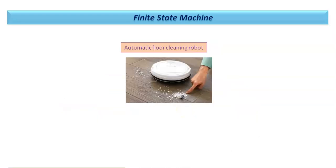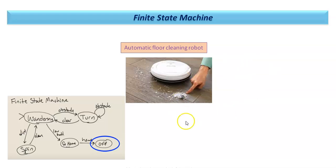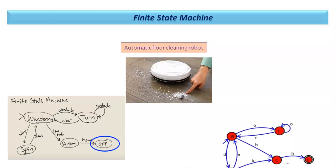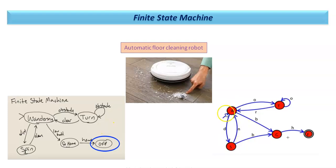Another example is an automatic floor-cleaning robot. It starts in a wandering or searching state. If it detects dirt it moves into the spinning state to clean. If an obstacle appears it enters a turning state. If the battery is low it goes to the home state to charge, and when in home state it turns off. These are the states; whenever it is in a particular state it performs that operation. This is another type of Finite State Machine. The name 'finite' is used because the states are countable — one, two, three, four, five — more than one state must be present.